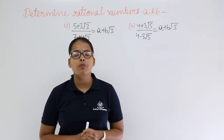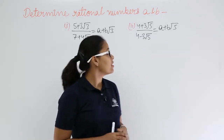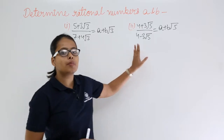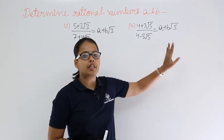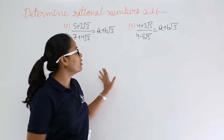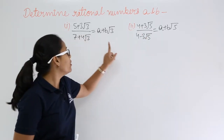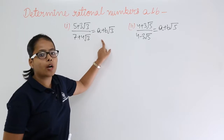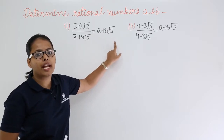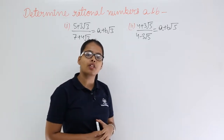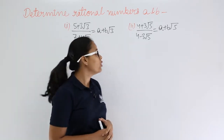Let's discuss this problem which says: determine rational numbers a and b. There are two expressions where you need to find out the value for a and b.